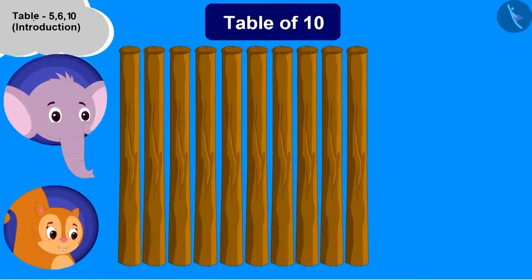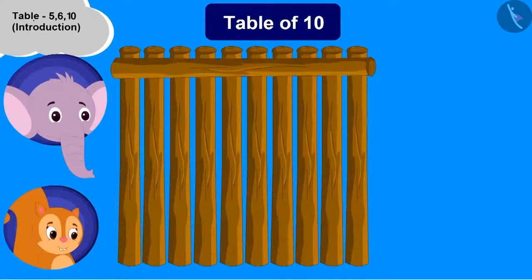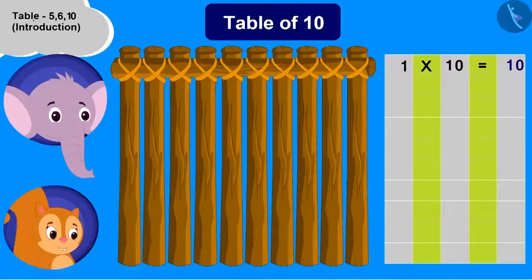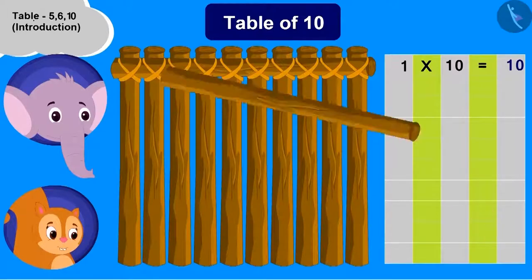Now what should we do to start building the boat and the table of 10? We have to place one wood horizontally. Now how much is 1 multiplied with 10? 10. What should we do next? We will add one more wood piece.